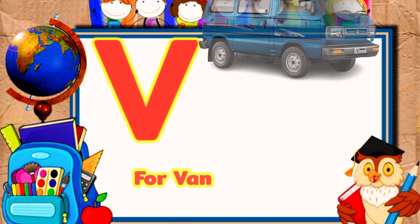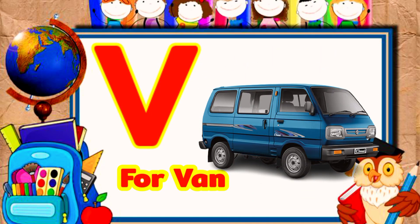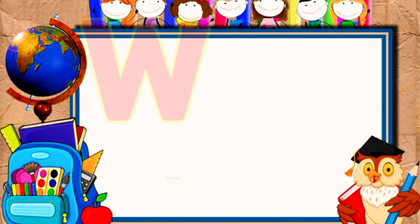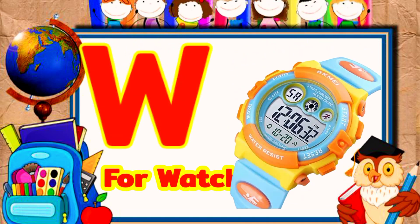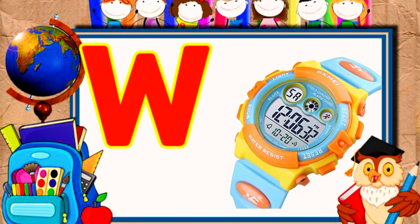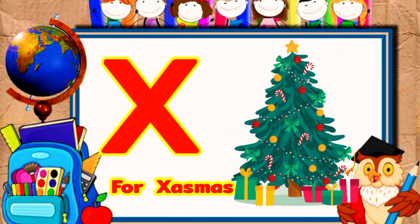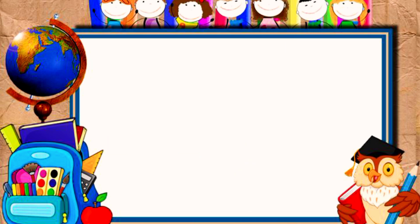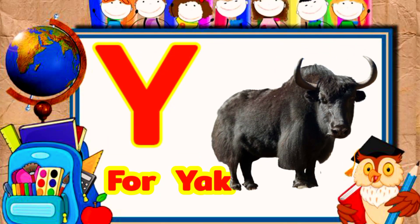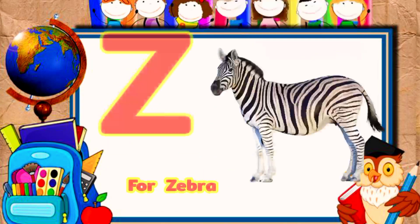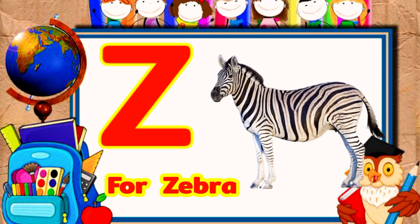V for red, W for watch, X for accessory, Y for yard, Z for zebra.